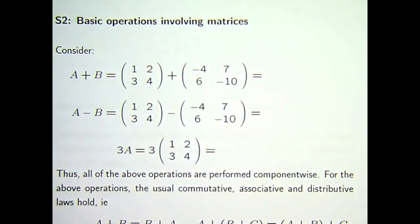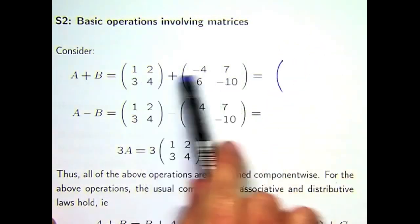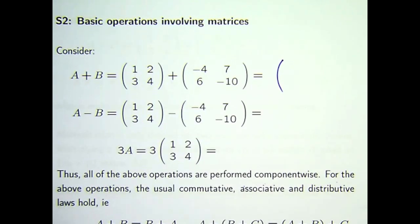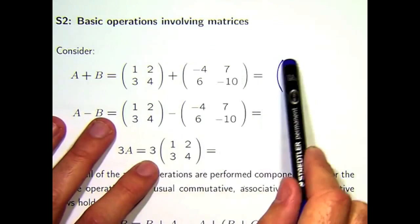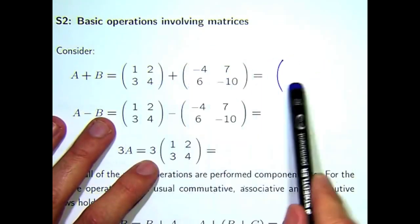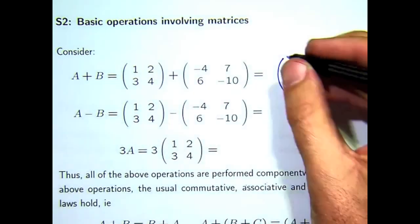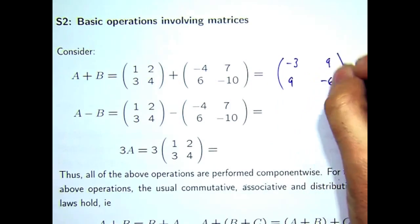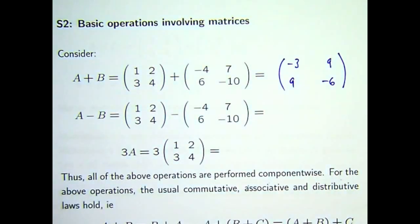So, up here, these are both two by two matrices. So, their addition is well defined. Same here, same size. So, taking one away from the other makes sense. So, you just do everything component-wise. So, this is going to be one minus four in here, two plus seven over here, three plus six down here, and four minus ten down there. So, you just add the corresponding elements or the corresponding components to each other and form a new matrix. Note that the answer is a matrix of the same size.